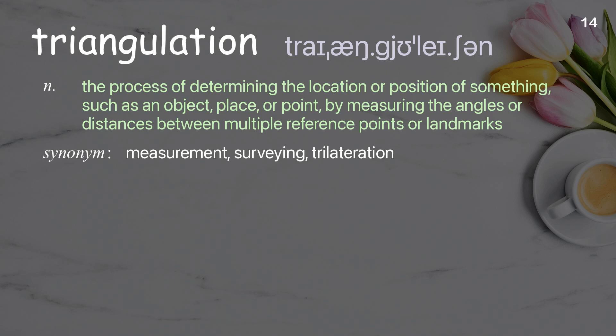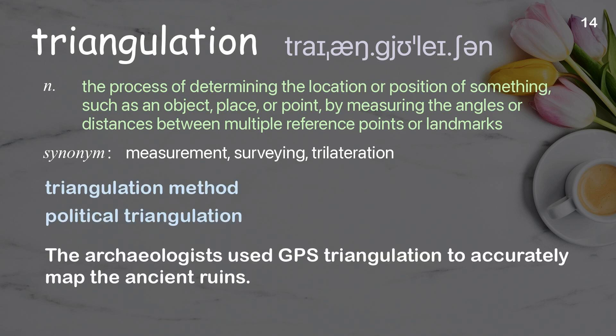Triangulation: the process of determining the location or position of something, such as an object, place, or point, by measuring the angles or distances between multiple reference points or landmarks. The archaeologists used GPS triangulation to accurately map the ancient ruins.